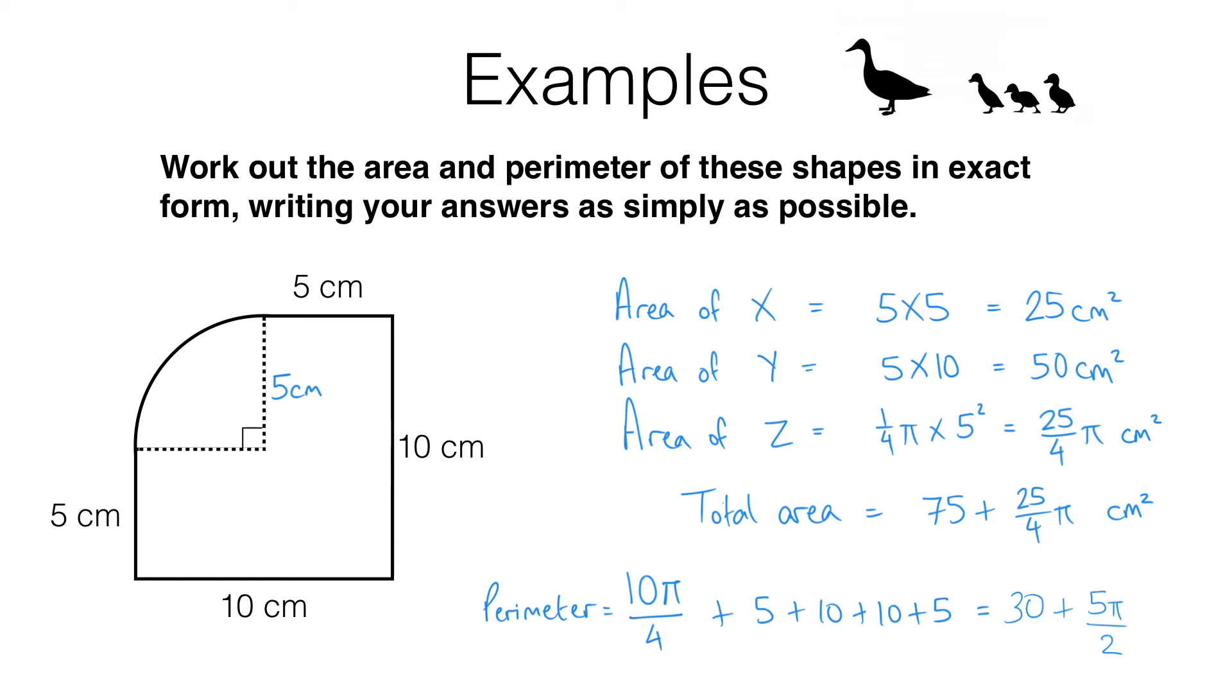So this perimeter is 30 plus 5 pi over 2. Remember that's a distance all the way around the shape and we were dealing with units of centimeters. So our answer is also going to be in centimeters.